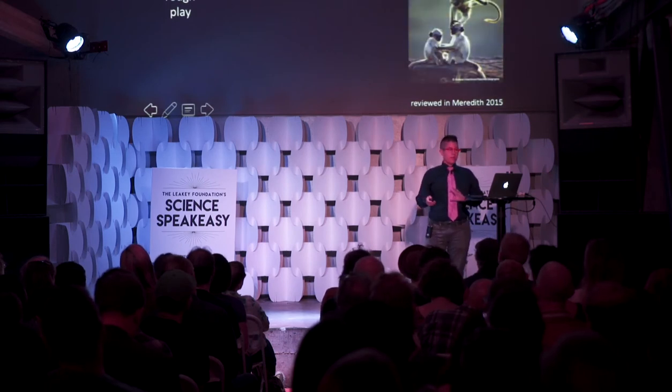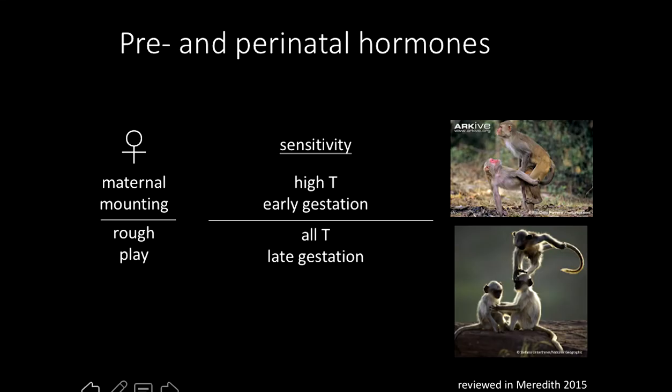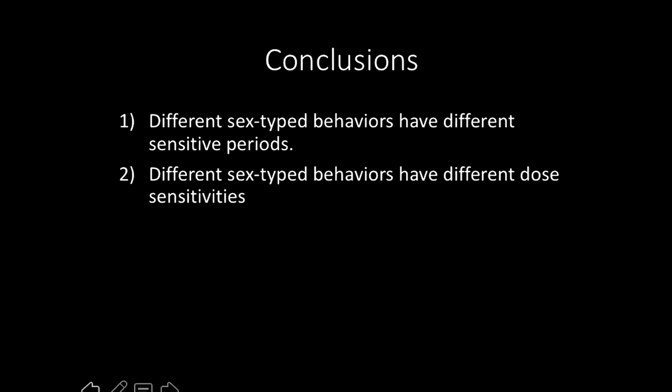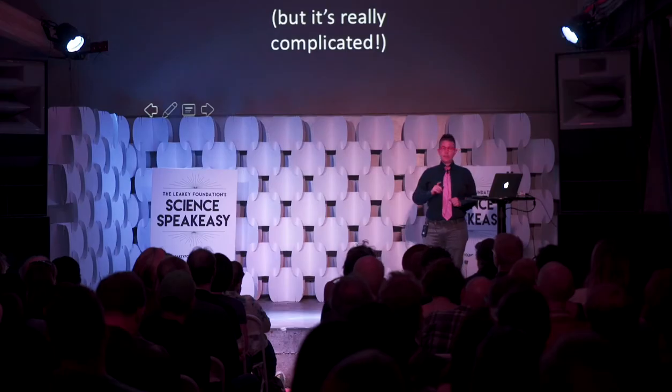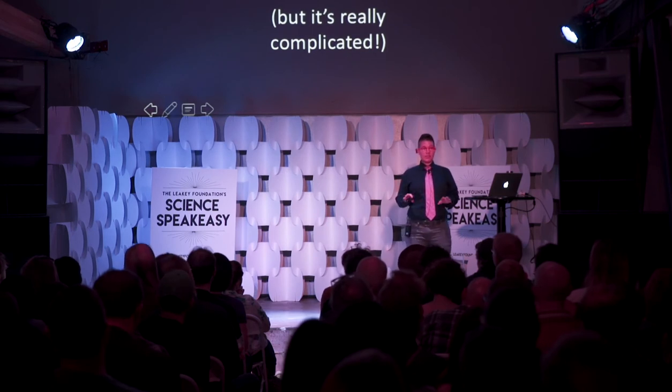So maternal mounting behavior is sensitive only to high doses of testosterone and only early in gestation. Rough play is sensitive to any level of testosterone, but only late in gestation. This pattern shows that individual behaviors have their own sensitive periods and dose sensitivities, different from those of other behaviors. The answer to whether hormones are important in driving sex-typed behavior in primates is certainly yes, but it's complicated. It's not a straightforward process of adding androgens to get butch monkeys or estrogens to get femme monkeys.